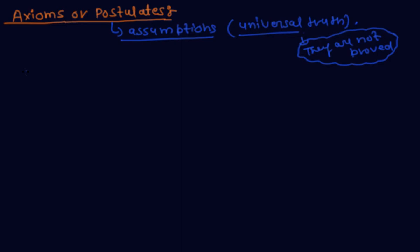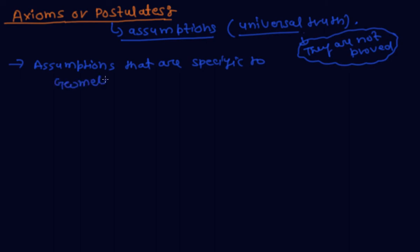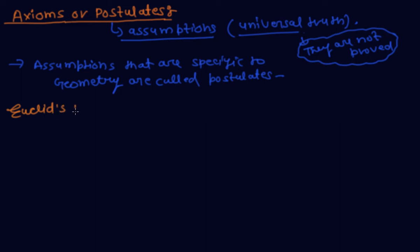The assumptions that are specific to geometry are called postulates. Some of Euclid's postulates are as follows.